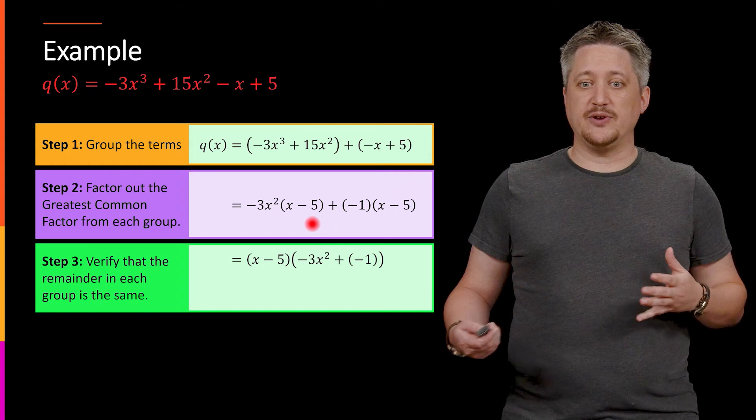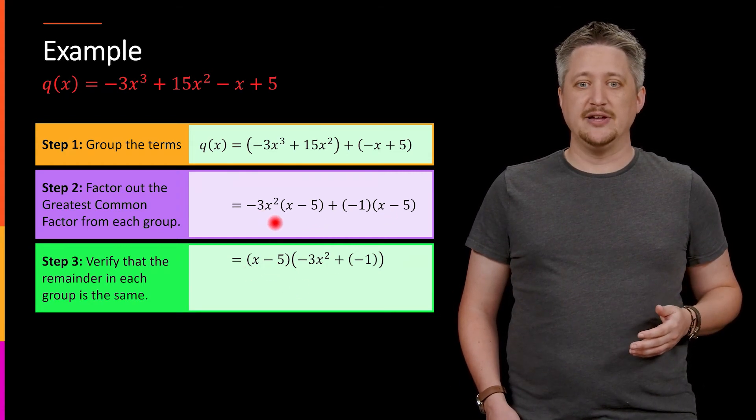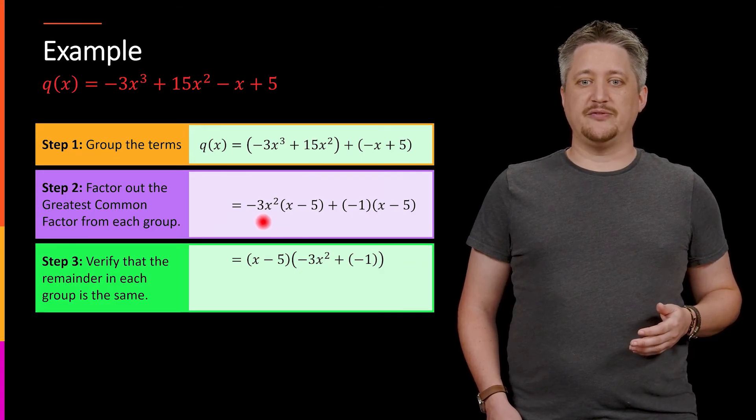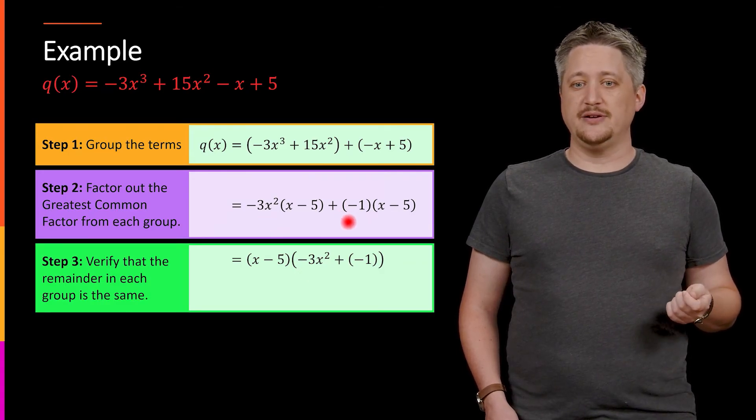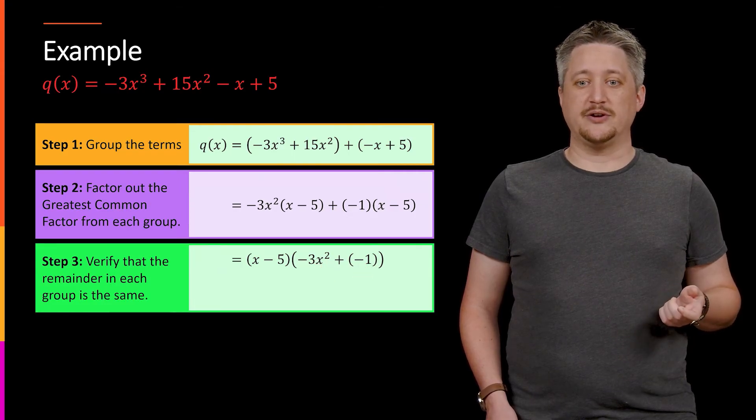So here it works. I have x minus 5 on both. So I factor that out. So I factor out both x minus fives to get the leading x minus 5. And that leaves me with this part left over, the minus 3x² and minus 1.